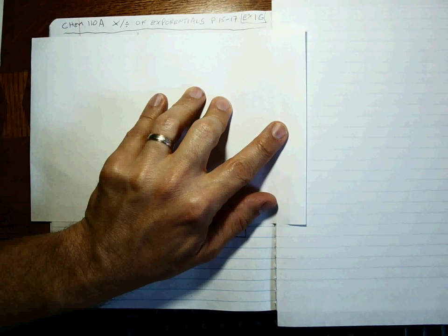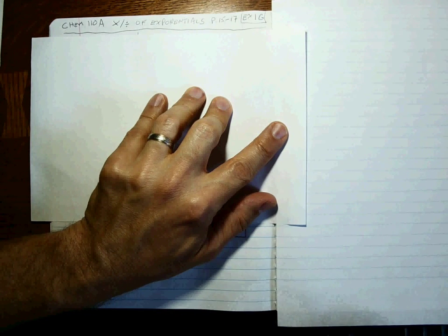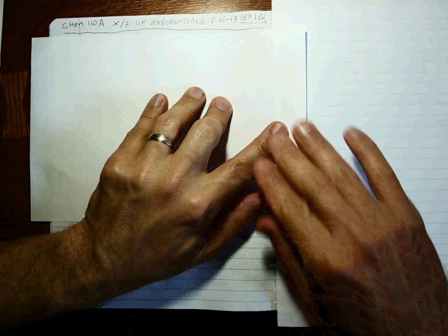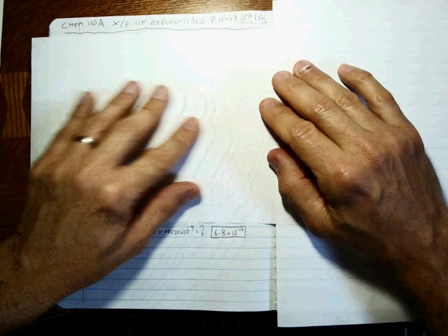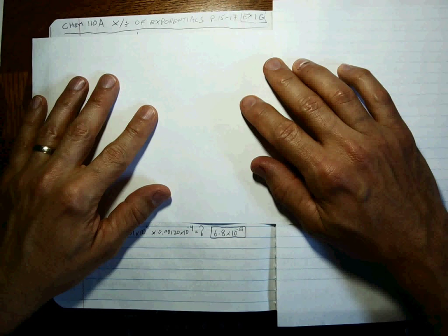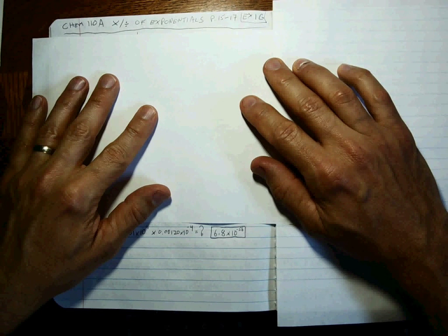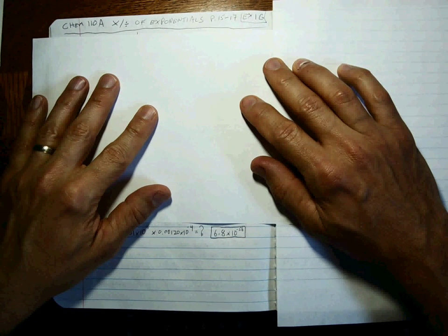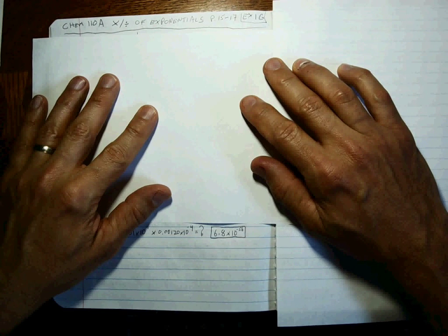Alright, let's get started. This is multiplication and division of exponential numbers, page 15 through 17, exercise 1G, chapter 1. You may have learned something different about having to add exponentials and doing just the value part.